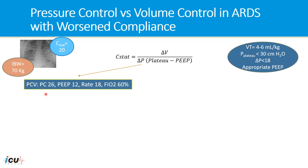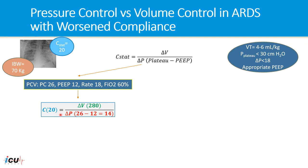If we decide to put this patient on pressure control mode of ventilation with a pressure control of 26 and PEEP of 12, we will have a static compliance of 20 equal to the fixed parameter — the pressure control of 26 minus 12 — a driving pressure of 14. That will result in a delivered tidal volume of 280 ml. This is a variable related to the patient's static compliance; if compliance changes, pressure is fixed and volume is variable.